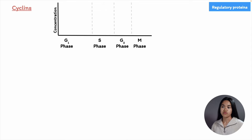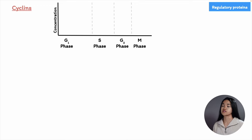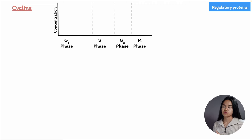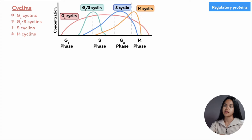Generally, regulation of the cell cycle is through the phosphorylation and dephosphorylation of proteins. One of the most common ways for cells to switch the activity of a protein on and off is through phosphorylation followed by dephosphorylation, and the cell cycle control system uses this process. Starting with cyclins, this group of proteins are called cyclins because of their cyclically fluctuating concentration in the cell. There are four types found in most eukaryotes: G1 cyclins, G1-S cyclins, S cyclins, and M cyclins.